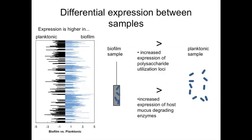This means that attached cells were preparing to degrade complex polysaccharides and host mucus, even though they were fed with simple sugars in this study. This indicates that host mucus or complex polysaccharides may be the typical carbon sources for B-theta in attached communities.